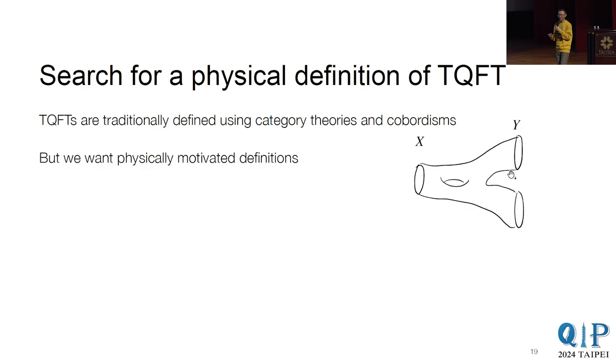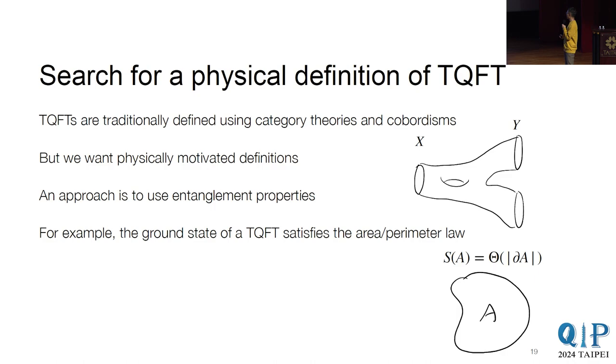But as a physicist, I want to find something that's physically motivated. And so a natural approach might be these entanglement properties. And in particular, people know that for ground states of TQFT, they satisfy these area law. So, for example, here you have a ground state, and then you pick out a region A, then its entropy is proportional to its boundary. I should say that some of these are actually still conjectures, but they're generally believed to be true.